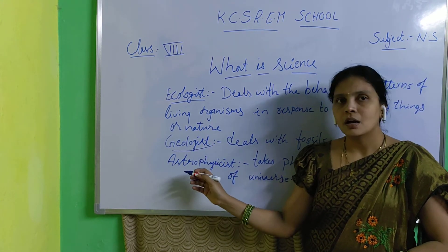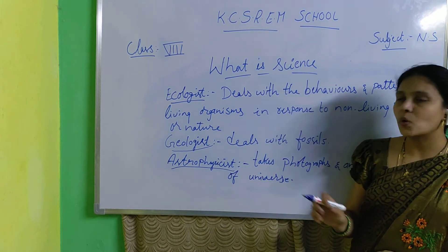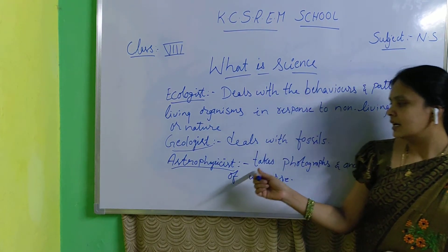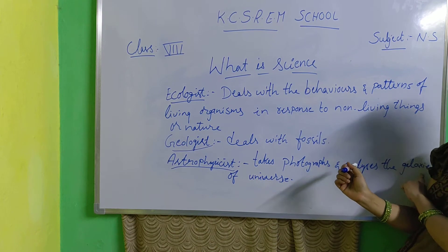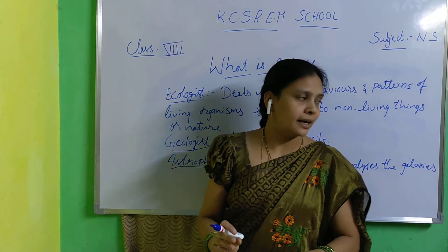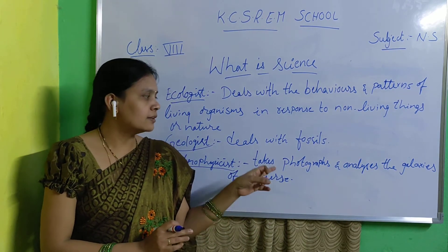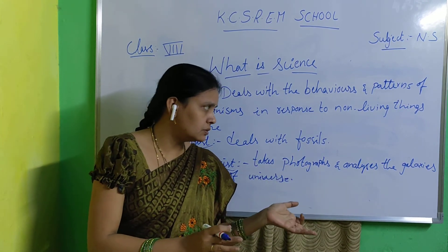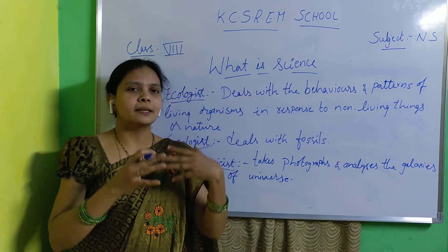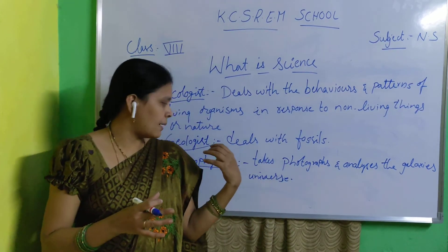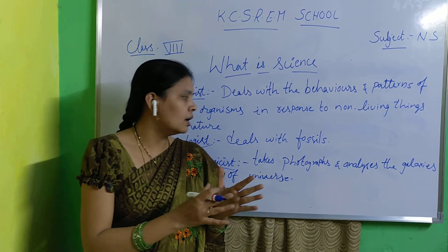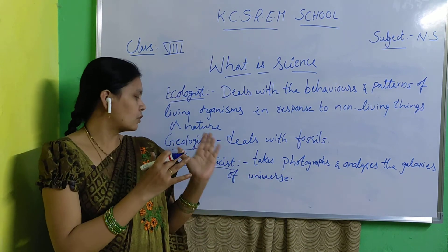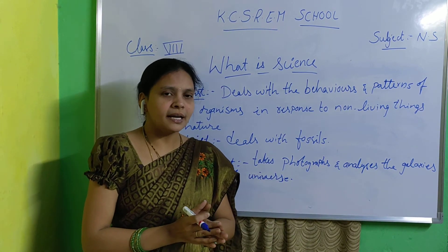The third type is an astrophysicist. An astrophysicist is a scientist who takes photographs and does analysis of galaxies and the universe. You will learn about galaxies, the universe, the sun, and planets in geography or social studies. Those people who work on taking photographs and analysis of galaxies and the universe are called astrophysicists.